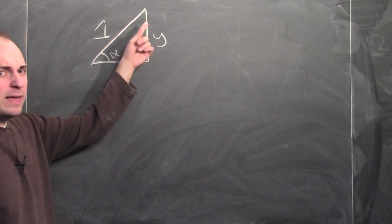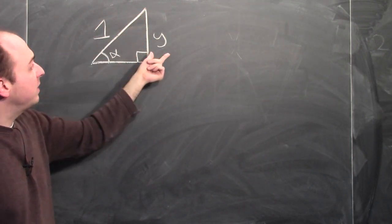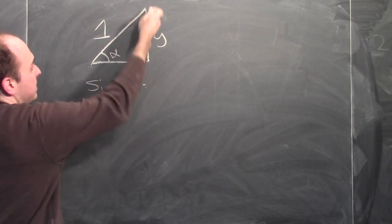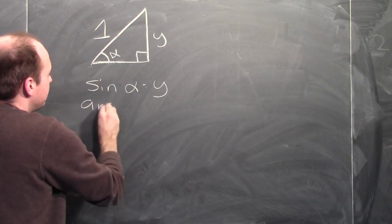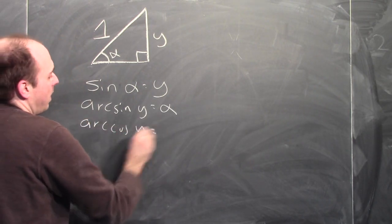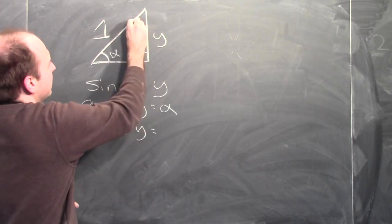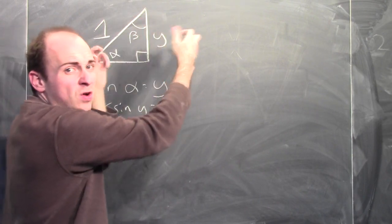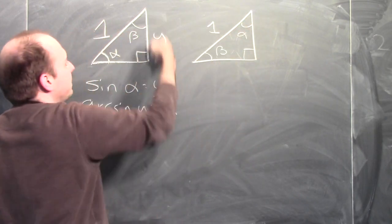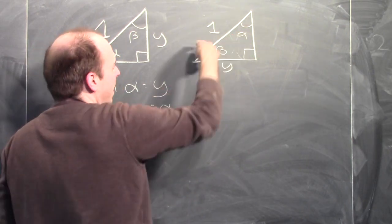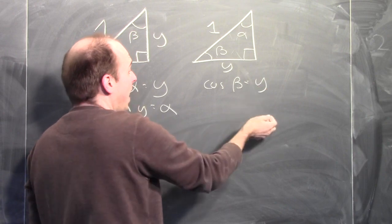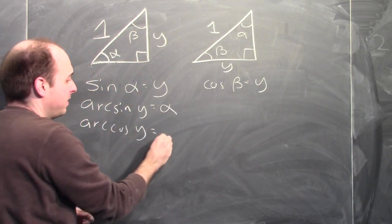Take a look at this triangle. This angle is alpha, and I'm labeling this side to have length y. The hypotenuse of this right triangle has length one. This triangle tells me that the sine of alpha — this side divided by the hypotenuse — is y. Consequently, the arcsine of y is alpha. Now, what's arc cosine of y? I'll draw another triangle. I'll label this angle beta, and imagine flipping the triangle over, so this angle is beta, this is alpha, the hypotenuse is still length one, and the side labeled y is now the adjacent side. This triangle tells me that the cosine of beta — this width divided by the hypotenuse — is y. Consequently, the arc cosine of y is beta.